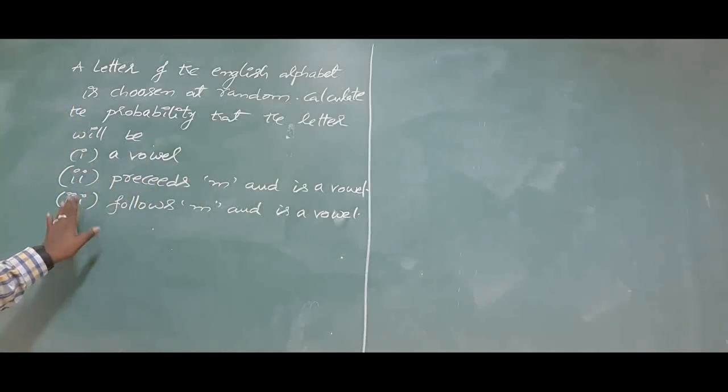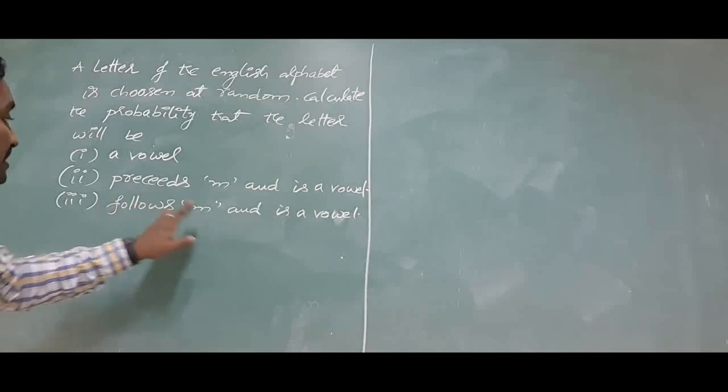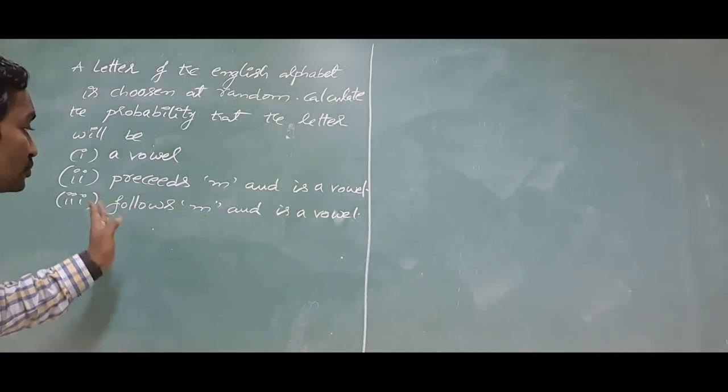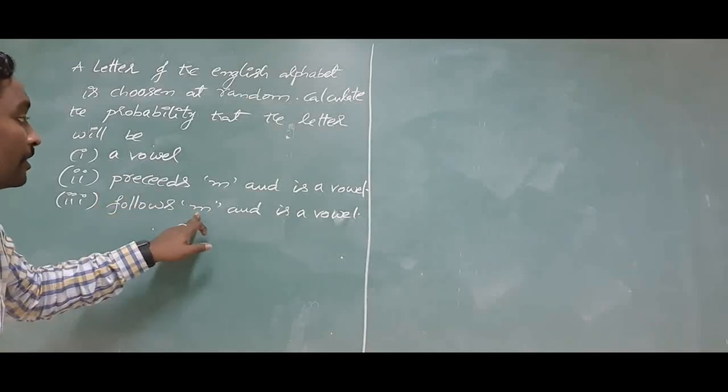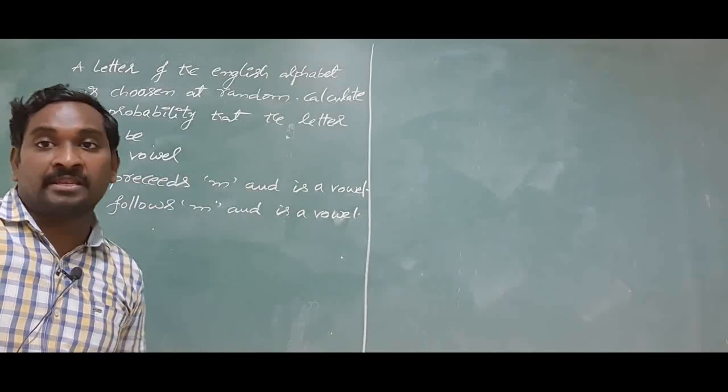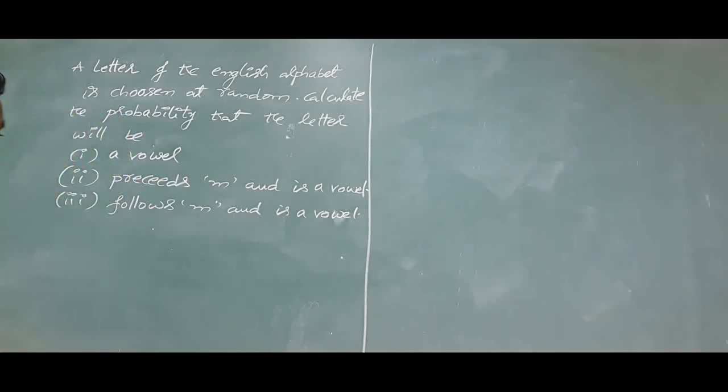Next what is it? Randomly selected letter should follow M. It means that letter should come after M and should be a vowel. So see here, first of all as usual we have to write the total number of possible outcomes in this random experiment.